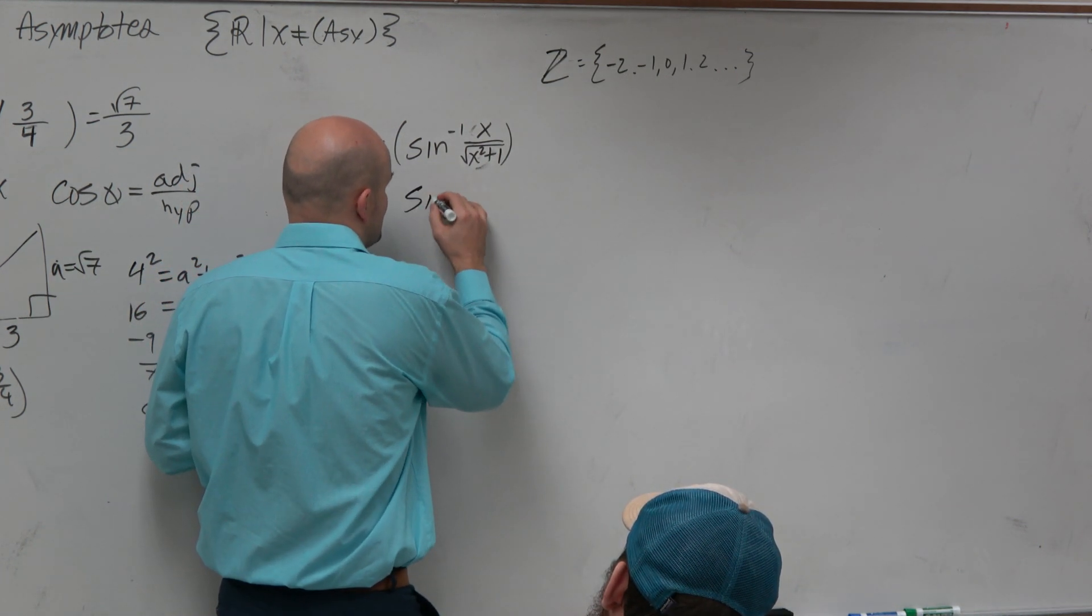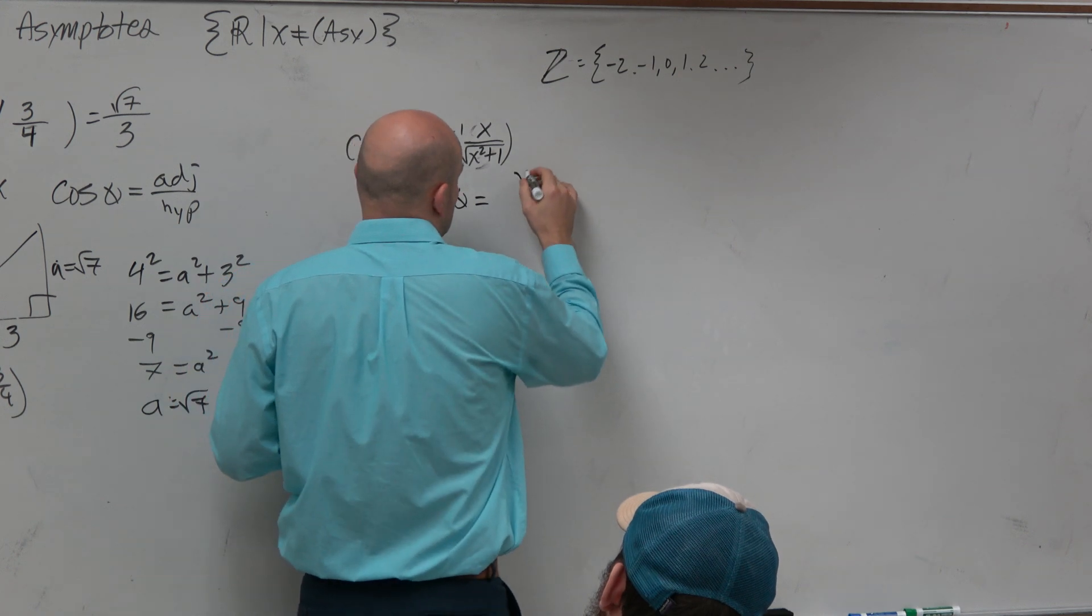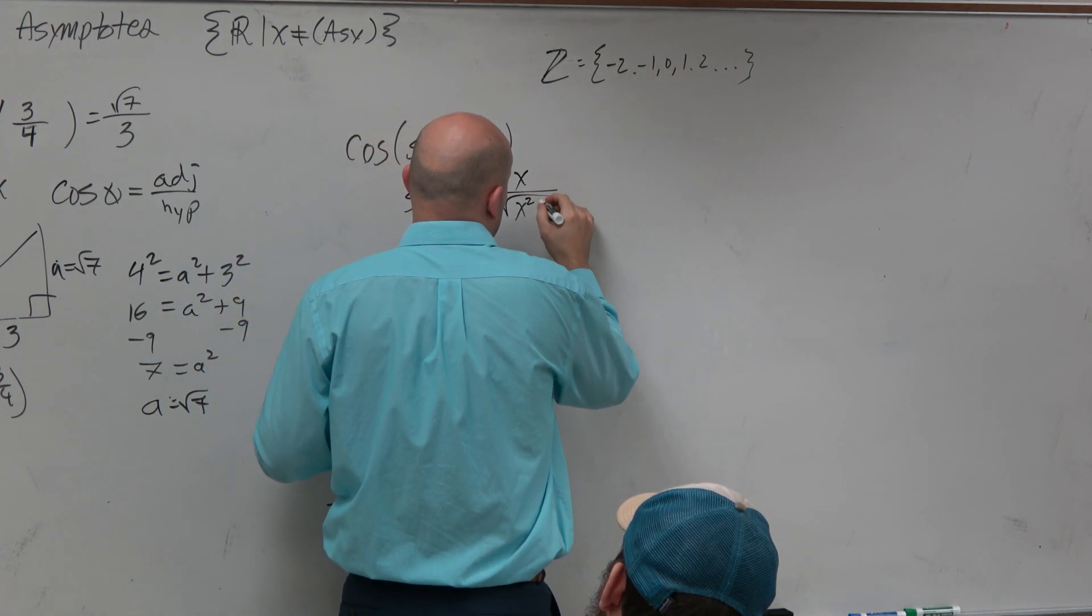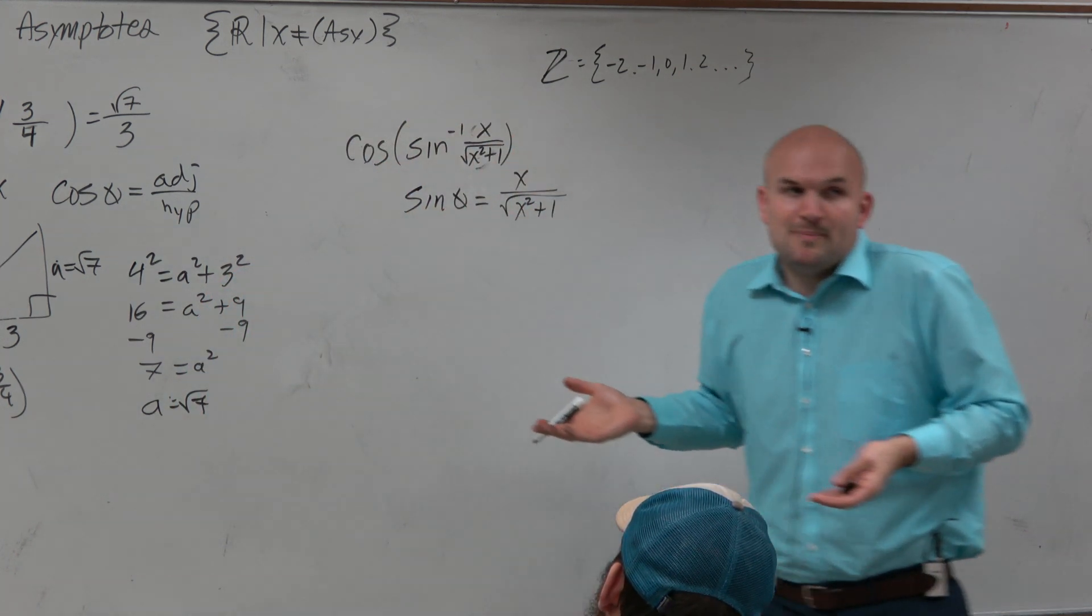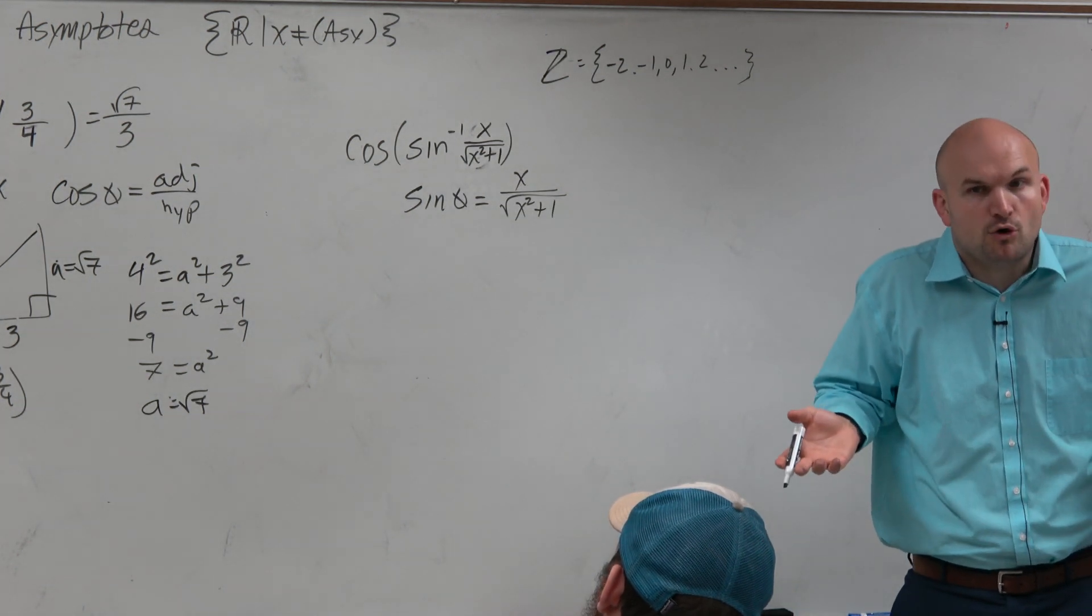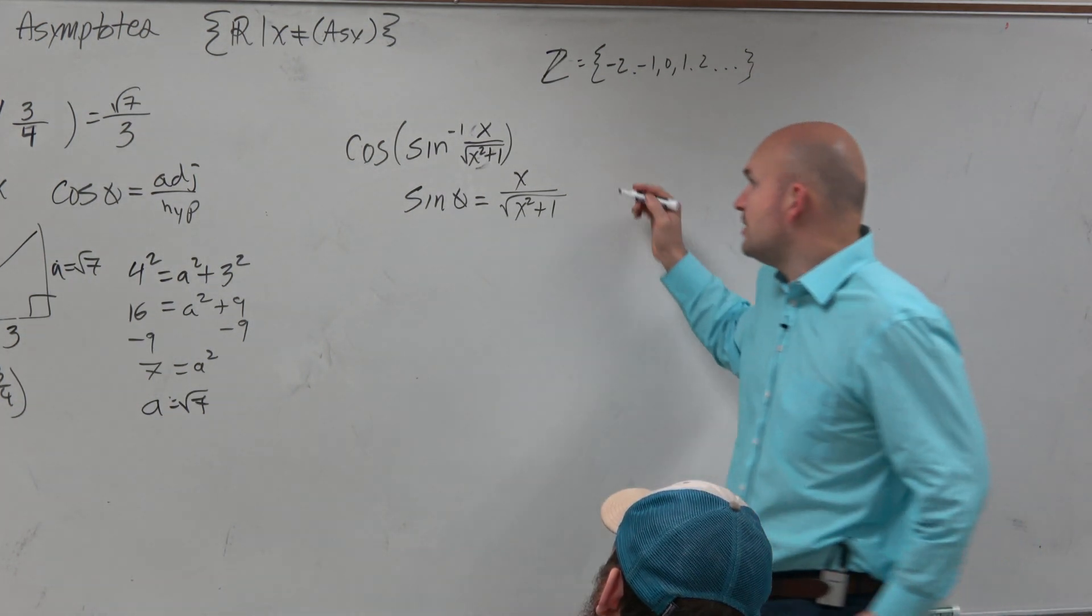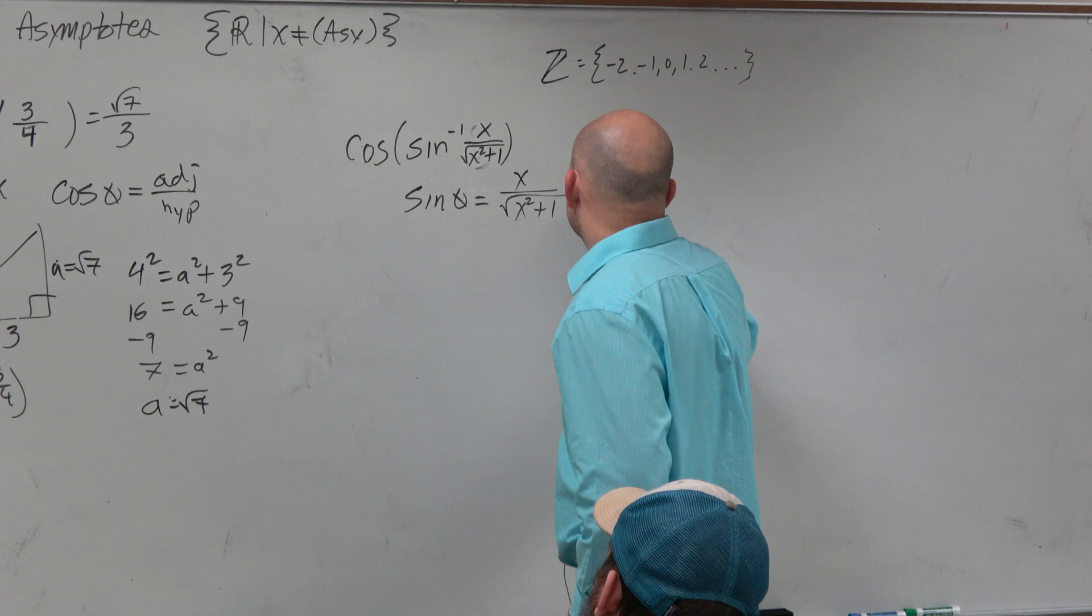Because this is basically saying the sine of some angle equals x over the square root of x squared plus 1. We don't want to represent that as y, as the y-coordinate, right? We're going to want to represent that as the opposite over the hypotenuse.